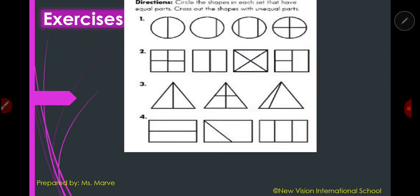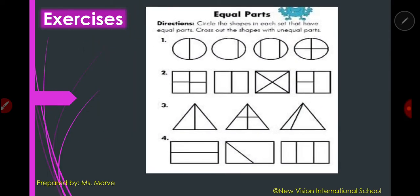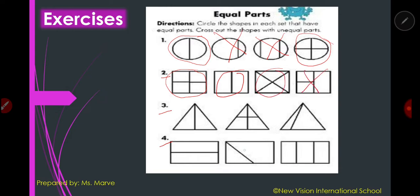Here is another example. We are going to circle the shapes in each set that have equal parts, and cross out the shapes that are not equally divided. Number one: circle this one and this one, cross out this one and this one. You can answer numbers two, three, and four. Let's check your answers: number two — this one correct, this one correct, this one correct, this one wrong. Number three — this one wrong, this one wrong. Number four — this one correct, this one wrong, and this one correct. Are your answers the same as mine?